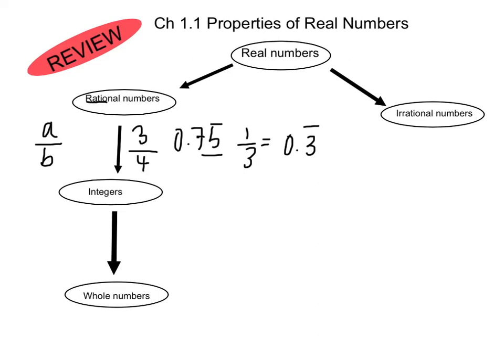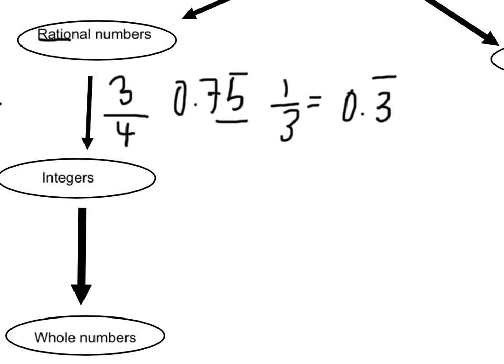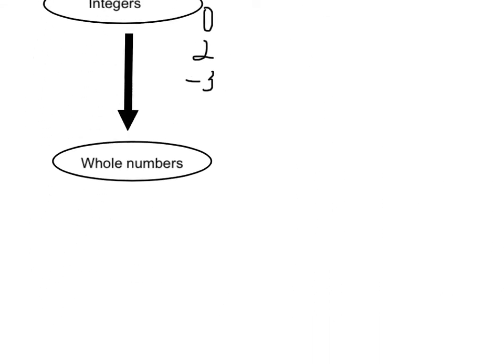Within Rational Numbers, we have integers, which are zero, positive whole numbers like two, and negative whole numbers like negative three. Within Integers are whole numbers. Whole numbers cannot be fractional, decimal, or negative, so that would just be one, two, three, etc.